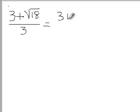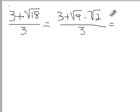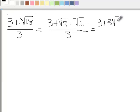And so we can say 3 plus square root of 9 times square root of 2 all over 3. And our square root of 9 is a perfect square of 3, so we'll have 3 plus 3 square root of 2 over 3.